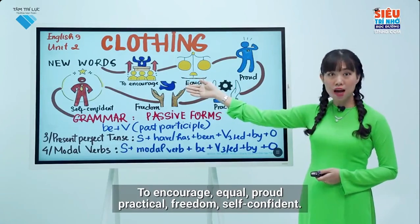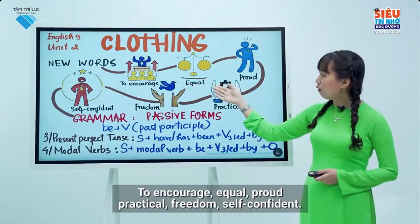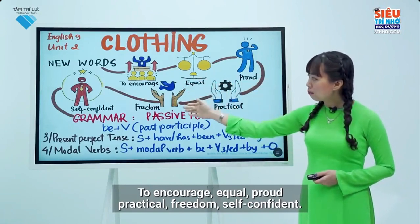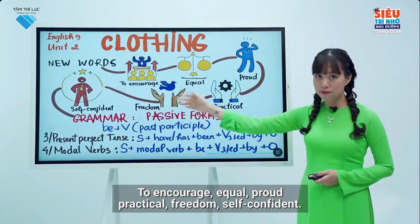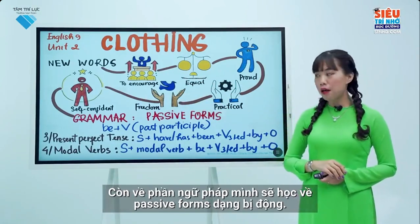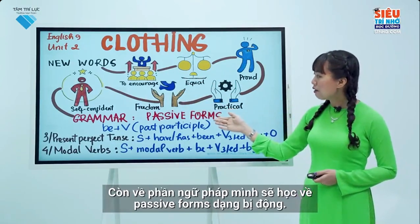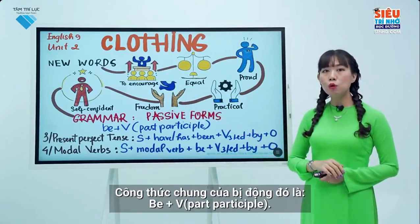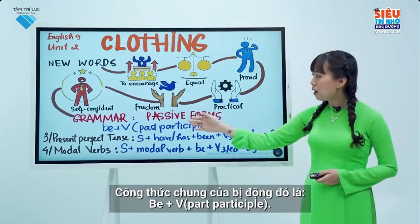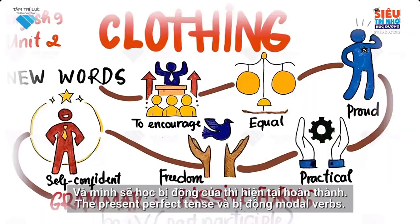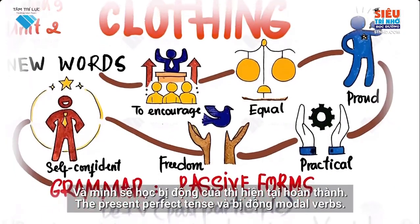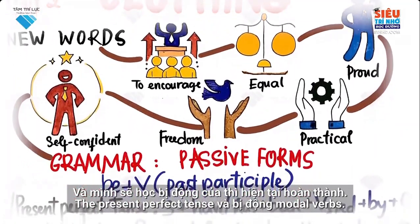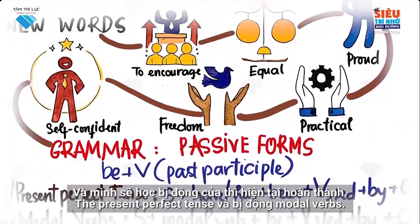The new vocabulary words are: to encourage, equal, proud, practical, freedom, and self-confident. And about the grammar, we will learn about passive forms. The general structure of the passive form is be plus verb past participle. Today we will learn about the present perfect tense and the passive form of modal verbs.